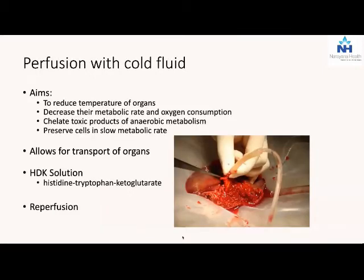All organs once harvested are perfused with cold fluid to reduce their temperature and metabolism, so cells can withstand some amount of anaerobic metabolism because their metabolic rates and oxygen consumption go down. A lot of these fluids have chelating agents that chelate products of anaerobic metabolism such as superoxides, and a balanced electrolyte solution that tries to maintain homeostasis around these cells during transport. The ones currently used are UW - University of Wisconsin - solution. This is what we do to cool the organ and allow it to be transported from one hospital to another.